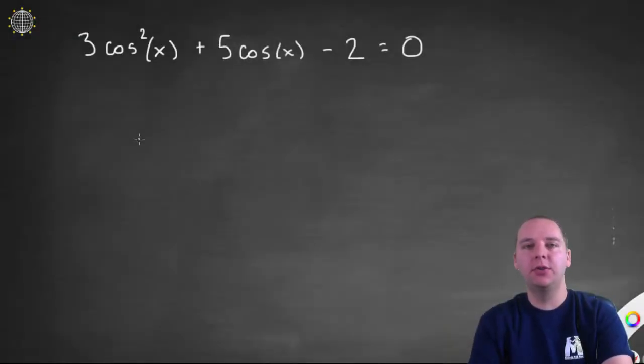Here's another example where inverse trig functions can be helpful in helping us solve an equation that has trig expressions in it. So what we have here is 3 cosine squared x plus 5 cosine x minus 2 equals 0.